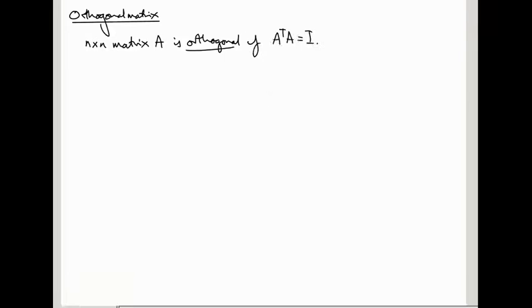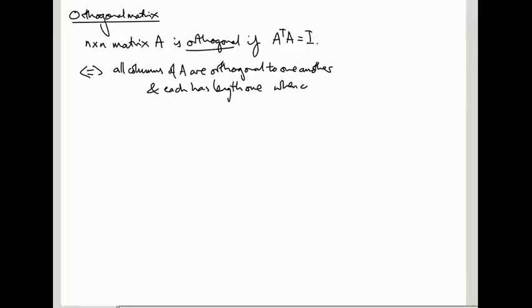We've seen the word orthogonal in the last video to describe two matrices that are perpendicular. This use of the word orthogonal is basically saying, I'm not going to prove this now, but this is equivalent to saying that all columns of A, considered as vectors, are orthogonal to one another and each has length 1 when considered as a vector. That's the reason for the word orthogonal here.